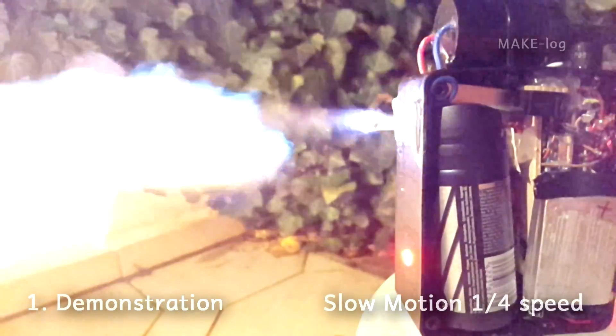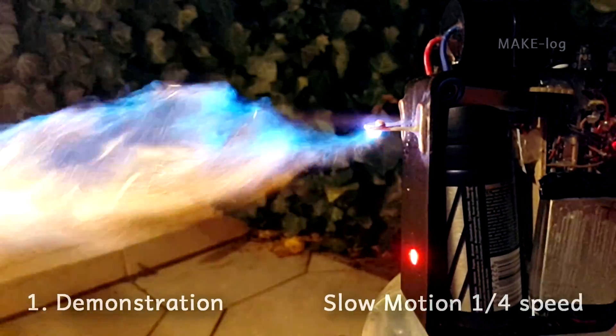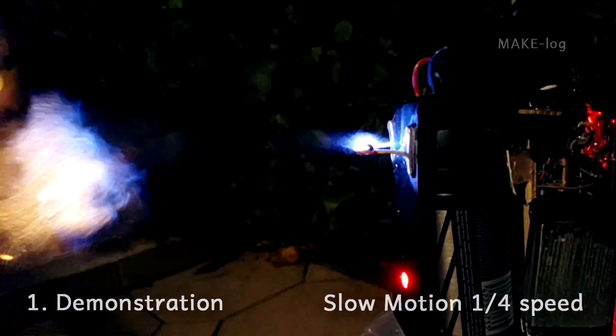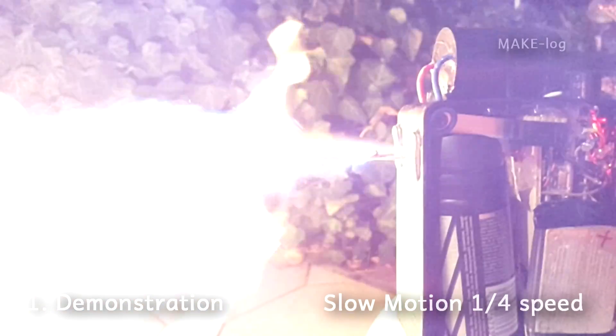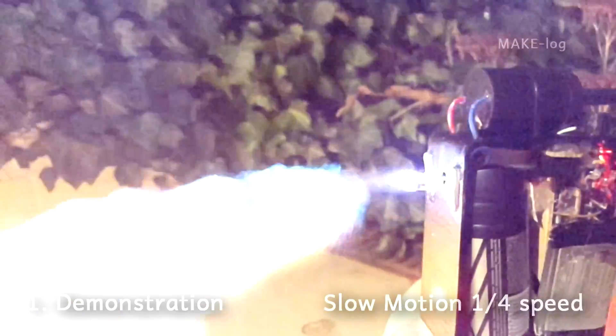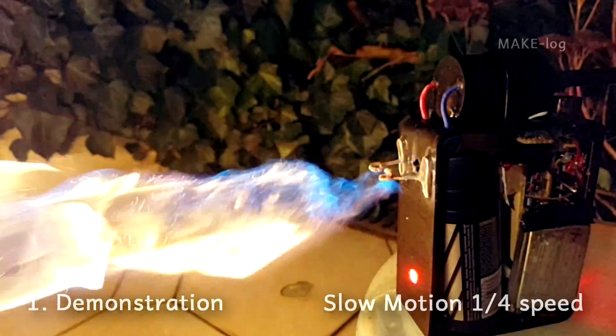Here I have filmed the flamethrower in slow motion. To the right of the spray can you can see the white servo arm, which pulls down the lever at the top of the spray can. If this lever is lowered, the valve of the spray can is opened. Shortly after that, the high voltage coil is connected to the battery via a MOSFET. The generated sparks ignite the spray.